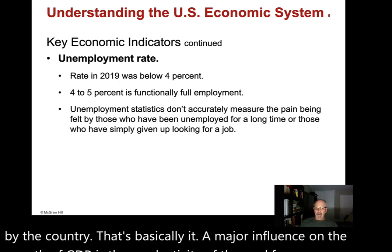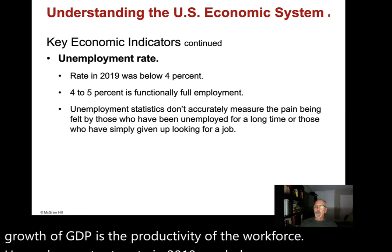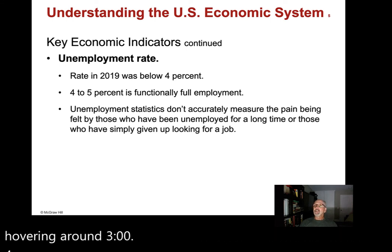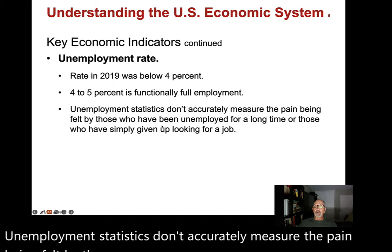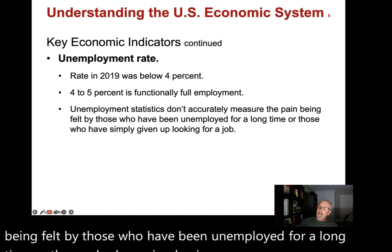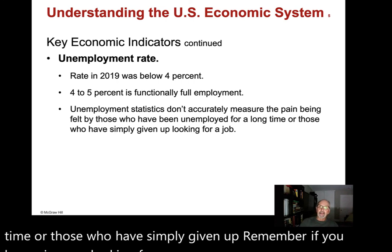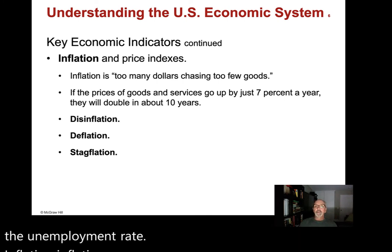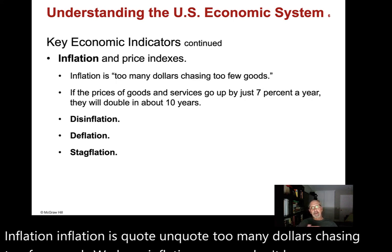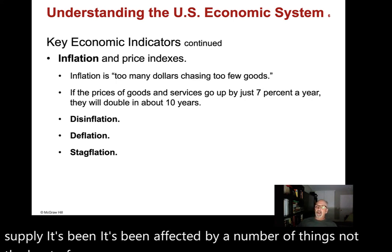Unemployment rate: in 2019 it was below 4%; it now hovers around 3%. Four to five percent is typically defined as full employment. Unemployment statistics don't accurately measure the pain felt by those unemployed for a long time or those who have given up — if you've given up looking for work, you're not included in the rate. Inflation is 'too many dollars chasing too few goods.' We have inflation now, partly because the supply chain has been disrupted, especially during COVID, reducing deliveries and leaving fewer goods available.